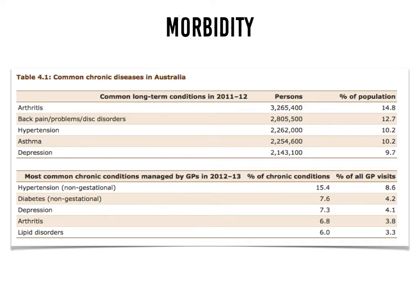We also have the most common chronic conditions managed by GPs — those that people are regularly visiting their GPs to get treatment for. These include high blood pressure, diabetes (non-gestational, meaning it doesn't occur during pregnancy), depression, arthritis, and lipid disorders, which relate to cholesterol and the amount of fat in the blood. These are the long-term illnesses and diseases affecting people in Australia.